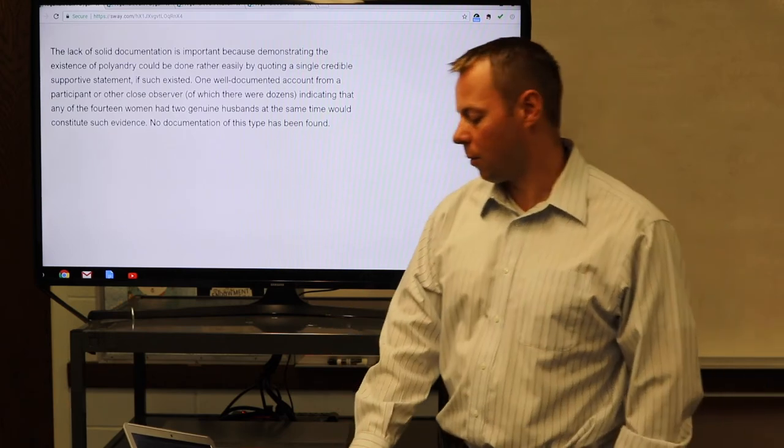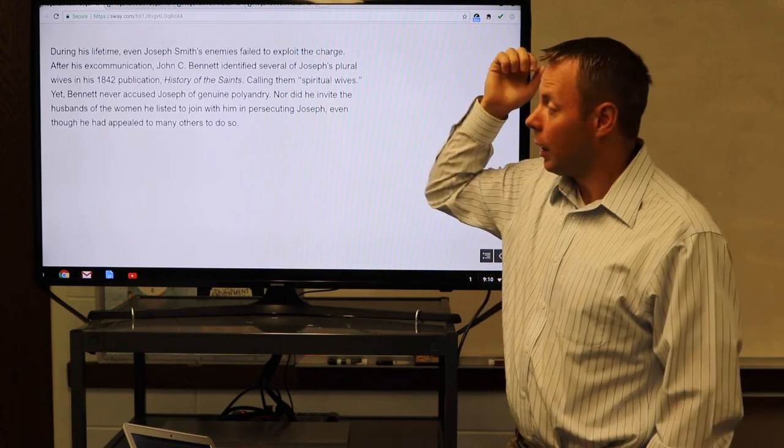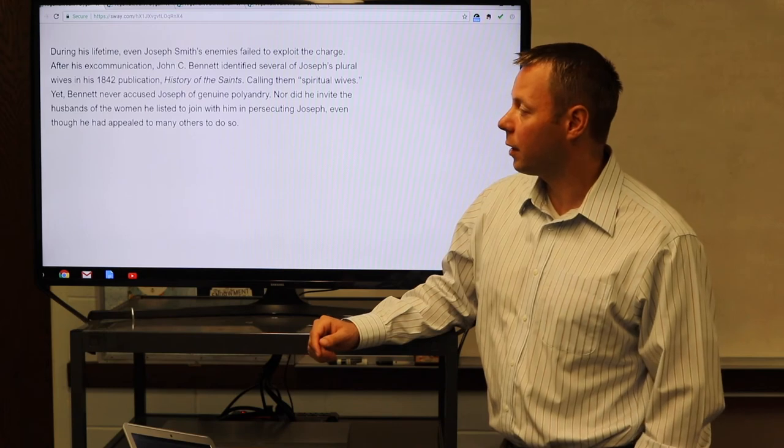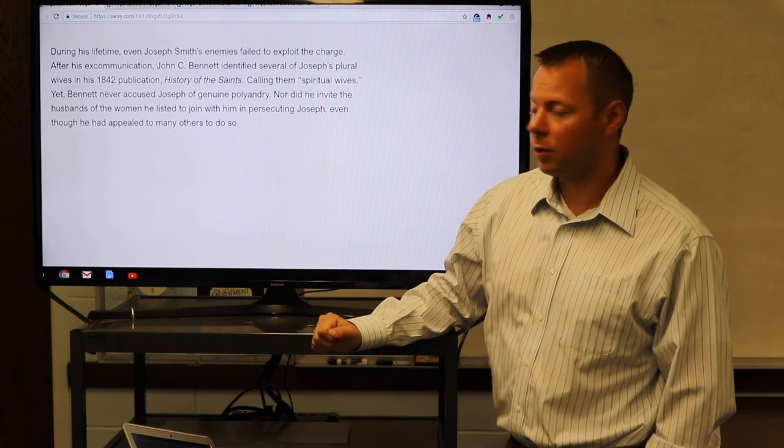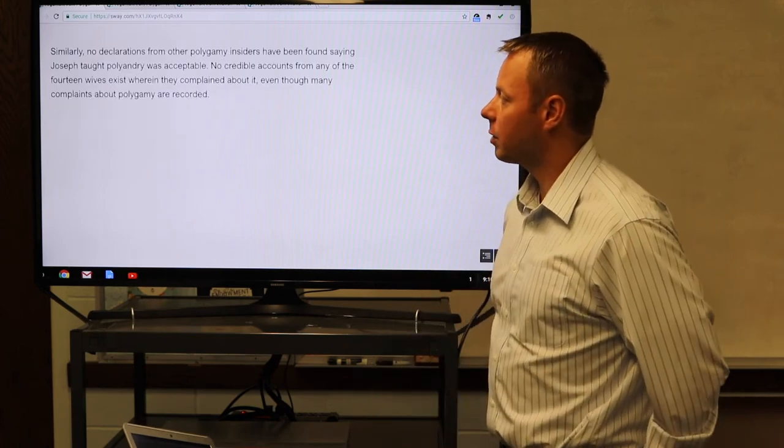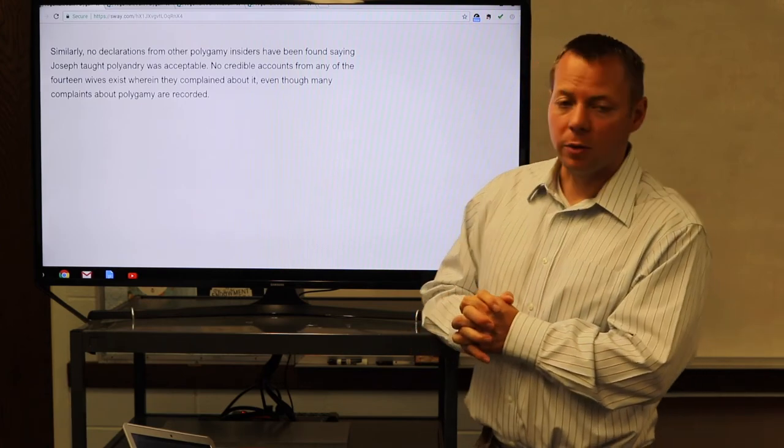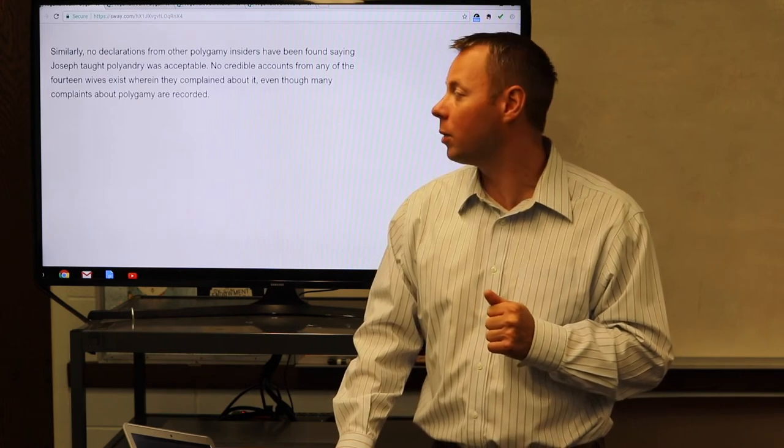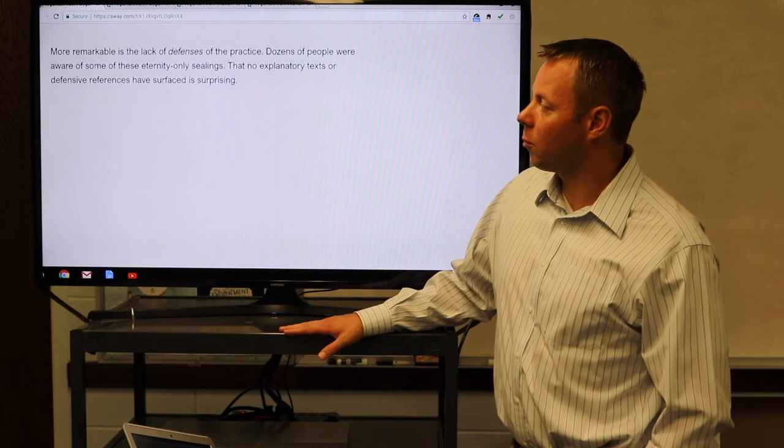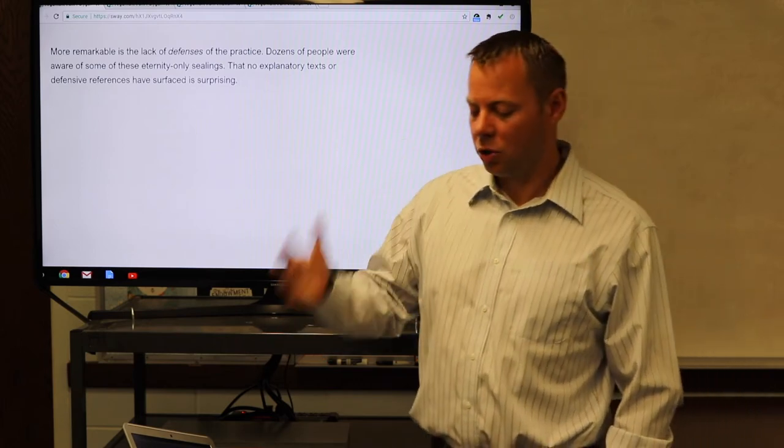During his lifetime, even Joseph Smith's enemies failed to exploit the charge of polyandry. After his excommunication, John C. Bennett identified several Joseph Smith's plural wives, calling them spiritual wives. Yet Bennett never accused Joseph of genuine polyandry, nor did he invite the husbands of the women he listed to join with him in persecuting Joseph. Similarly, no declarations from other polygamy insiders have been found saying that Joseph taught polyandry was acceptable. No credible accounts from any of the 14 wives exist wherein they complained about it, even though many complaints about polygamy are recorded. We have plenty of documentation about how hard and difficult polygamy is. We have nothing about actual polyandry happening. More remarkable is the lack of defense of the practice. That no explanatory text or defensive references have surfaced is surprising if it was actually a legitimate polyandrous relationship.